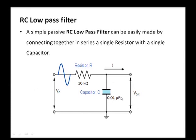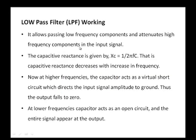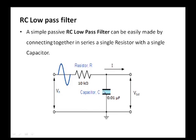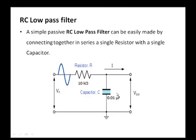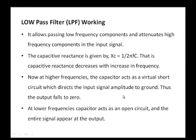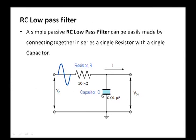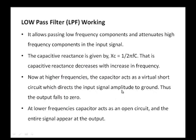This circuit allows low frequency components and attenuates high frequency components in the input signal. The capacitive reactance is calculated by the formula X_C = 1 / (ωC), where ω = 2πF, so X_C = 1 / (2πFC). That is, capacitive reactance decreases with increasing frequency. At high frequency, the capacitor offers low reactance and acts as a virtual short circuit, which directs the input signal amplitude to ground, and thus the output falls to zero. At low frequency, the capacitor acts as an open circuit — it offers high reactance — and the entire signal appears at the output.